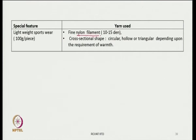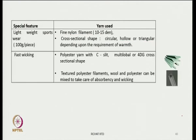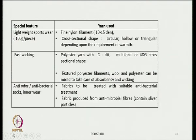For lightweight sportswear, the kind of yarn used generally includes filament with cross-sectional shapes that can be hollow or triangular depending on warmth requirements. For fast wicking, polyester yarn with sea-island, multi-lobal, or 4DG cross-sectional shapes are generally used. Textured polyester filament or wool-polyester mixes can be combined to take care of absorbency and wicking. Wool can absorb moisture, act as a buffer, and also help in wicking. Anti-odor or antibacterial inner wear requires fabrics treated by antibacterial treatments or produced from antimicrobial fibers.